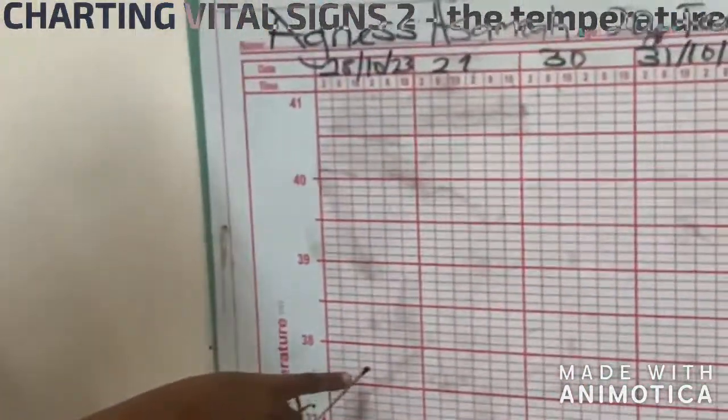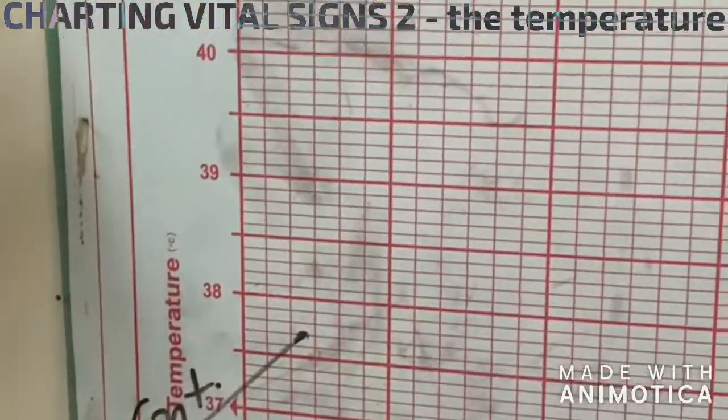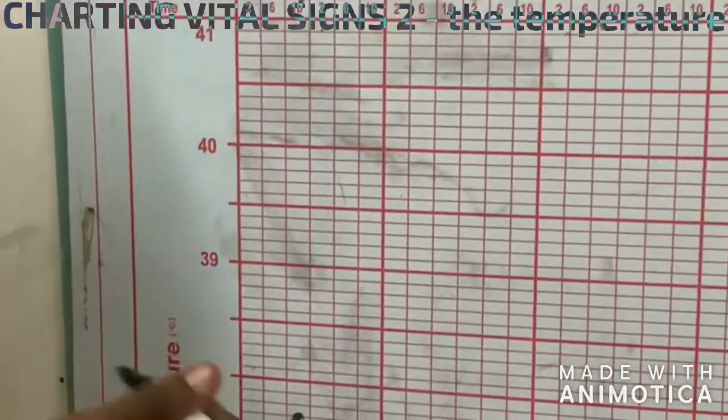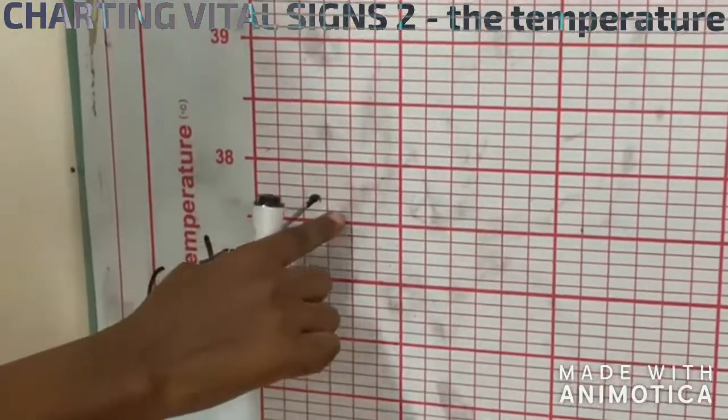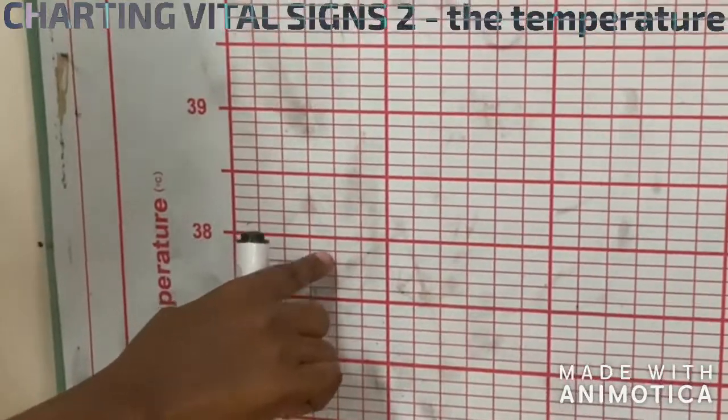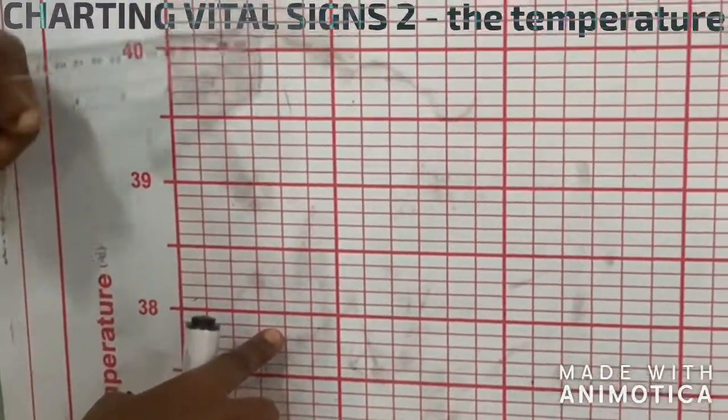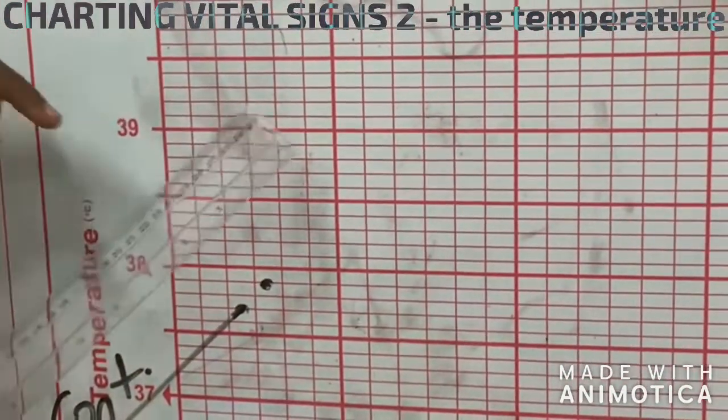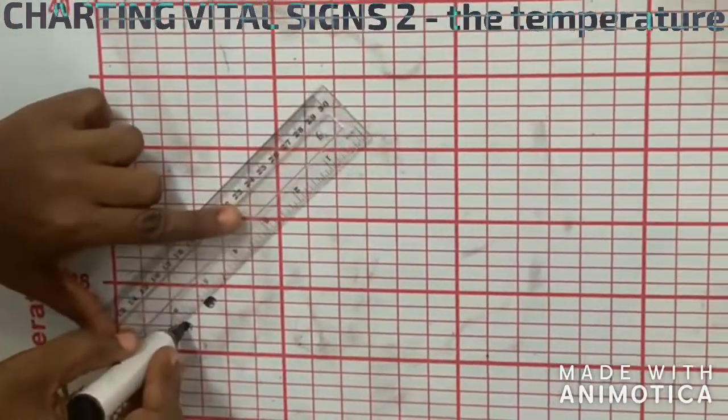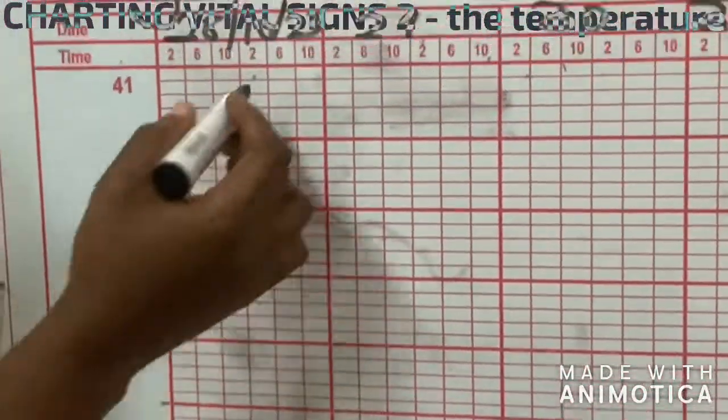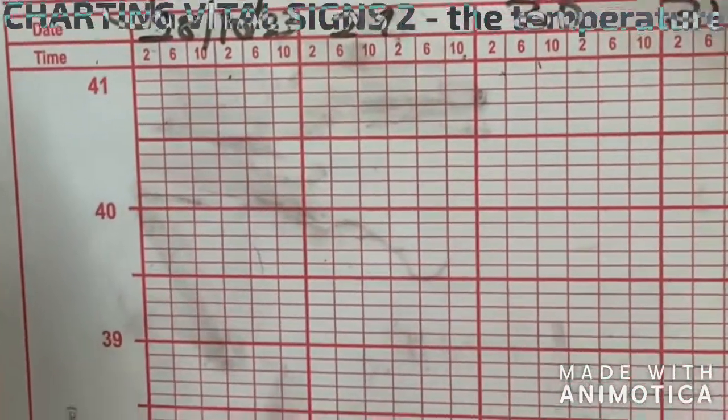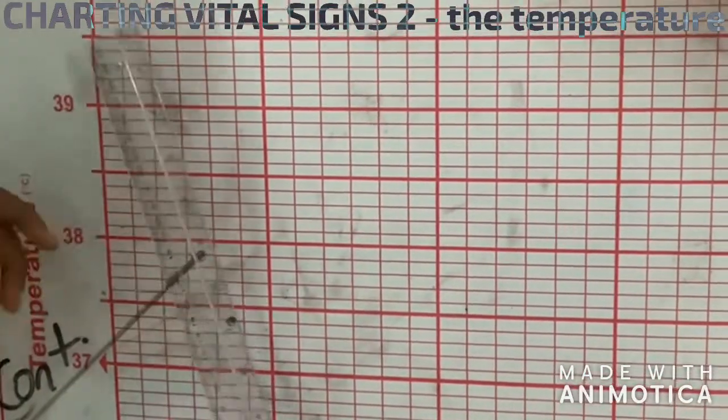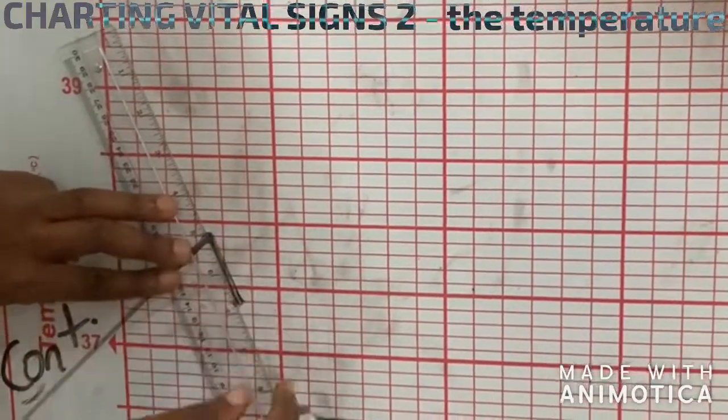So now we are at 37.7. Then at 2 p.m. we check temperature again and it is 37.9. So we come and count: this is 37.5, 0.6, 0.7, 0.8, 0.9. This is 2 p.m. Then you dot it, then you use your straight edge. At 6 p.m. it goes to 37.4. You plot it at 37.4, you plot it here.